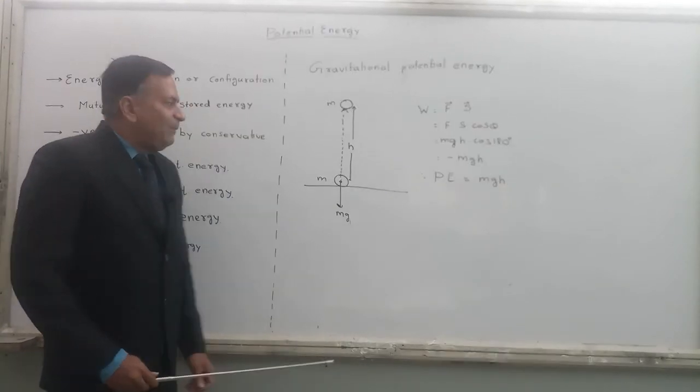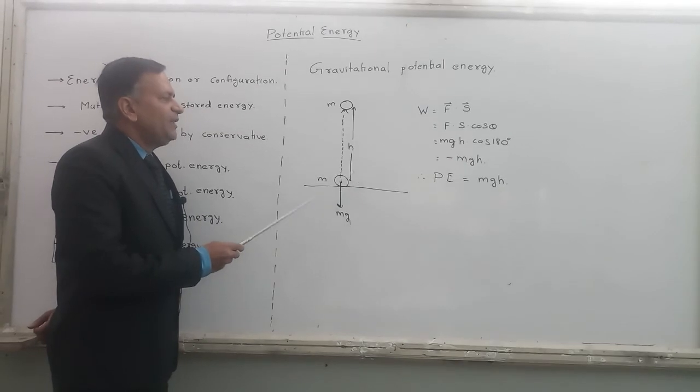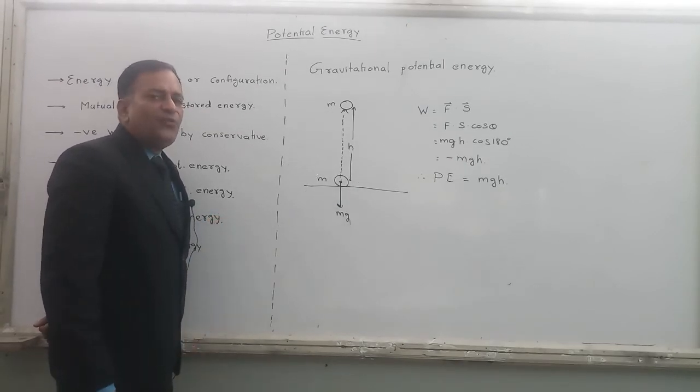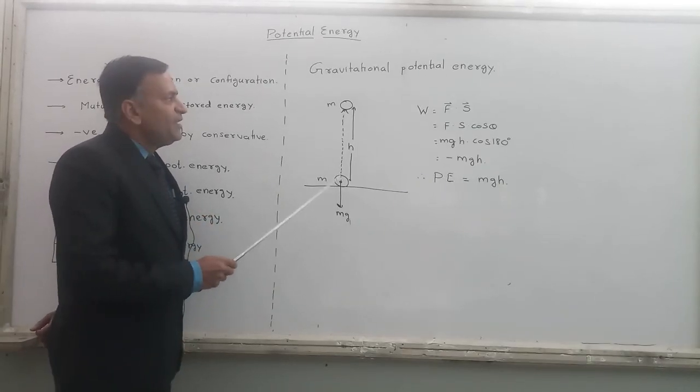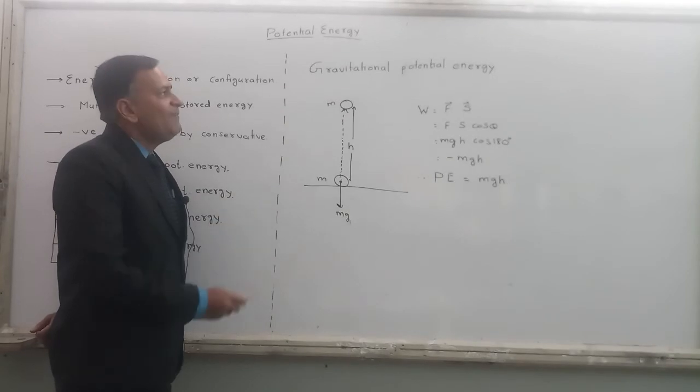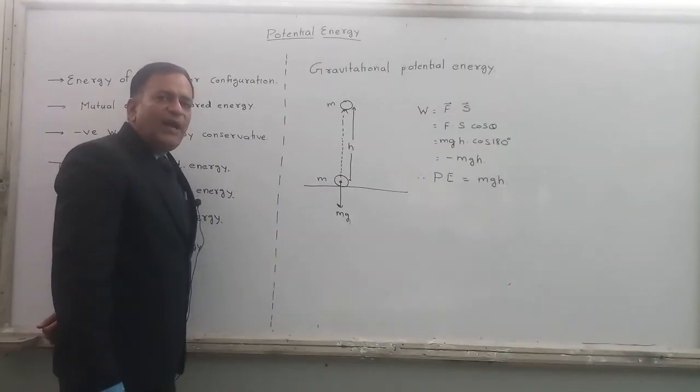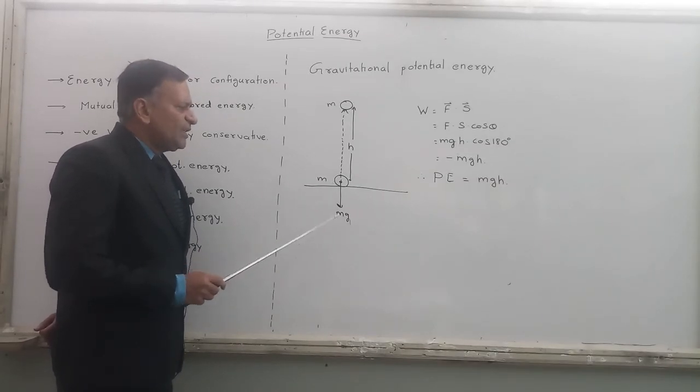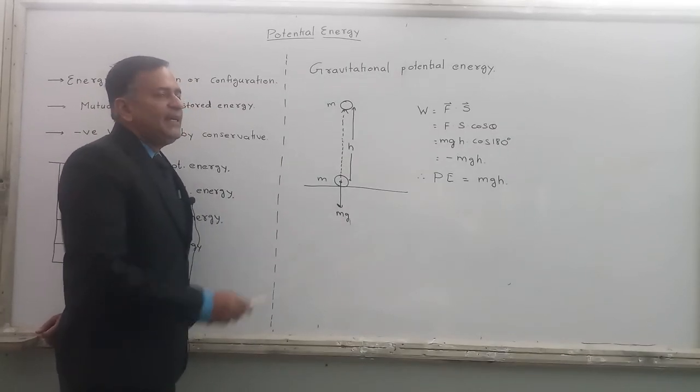Now, applying some force, the body is moved up, up to a height h. Initially the body was at height equal to zero, now it has reached height h. What is the work done by gravitational force? I am not finding the work done by the force which is moving it upwards. But I am finding gravitational potential energy, so I have to find the work done by gravitational force. The gravitational force on this body is downwards which is equal to mg. Displacement is in upward direction.